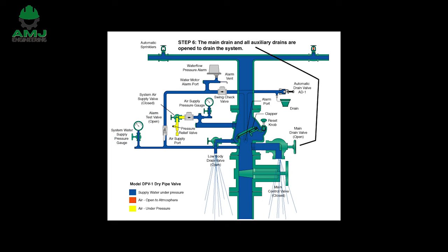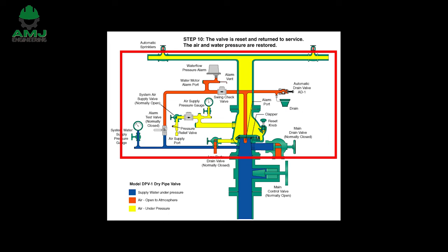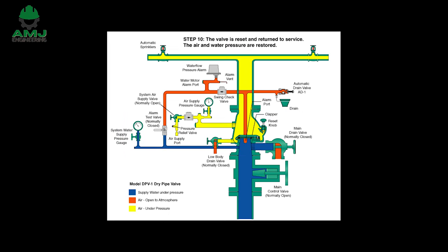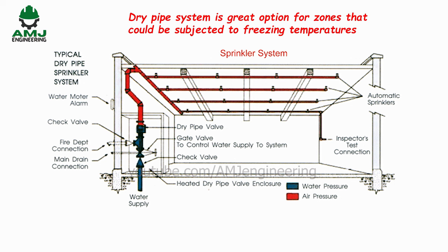Since there is a delay between sprinkler operation and water flow, the size of dry pipe systems is limited. This size limitation is intended to minimize the amount of time water delivery is delayed. A dry pipe system is a great option for unconditioned spaces or locations where the temperature cannot be guaranteed to be high enough to prevent water in the system from freezing.